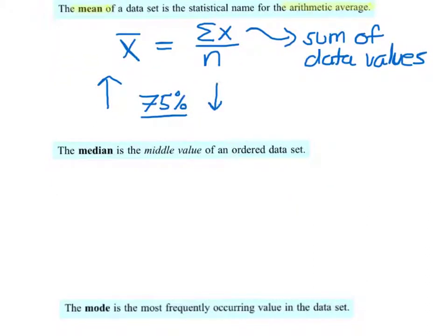The median is the middle value of an ordered data set. It's very important that we order the data set before calculating the median. We can use a stem and leaf plot, a dot plot, or simply list all the data values in order if there aren't too many.